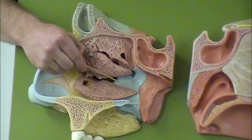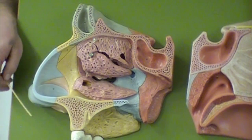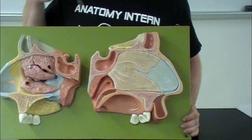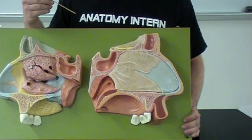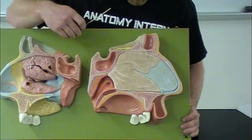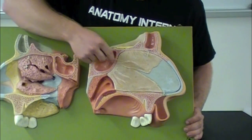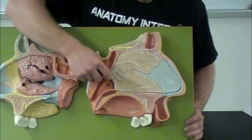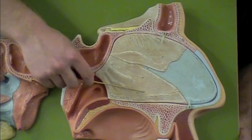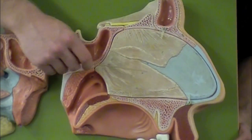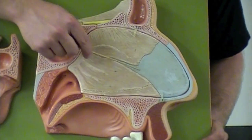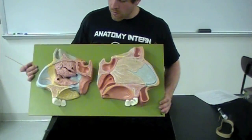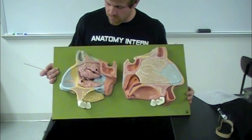Next we will go over the nasal septum. Your nasal septum is made up of three different structures: first, the perpendicular plate of the ethmoid bone right here; next will be the vomer right here; and then after that will be your septal cartilage, which is right here.